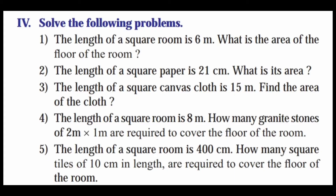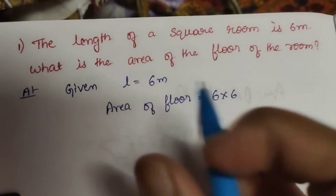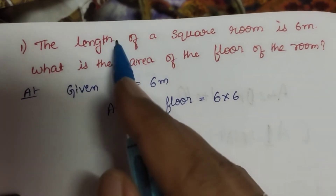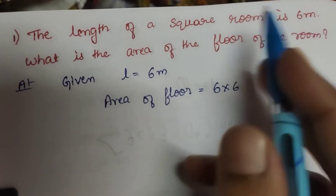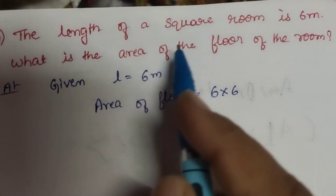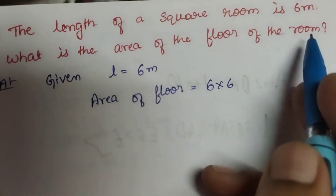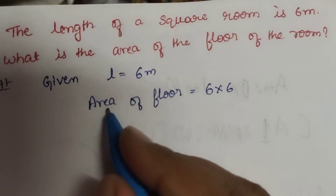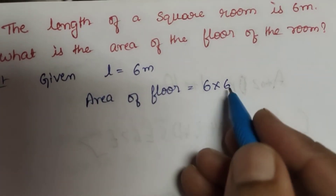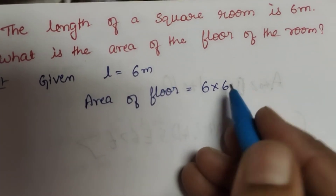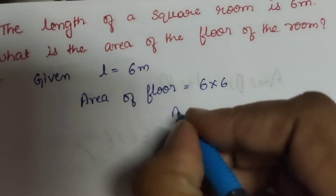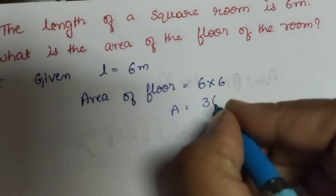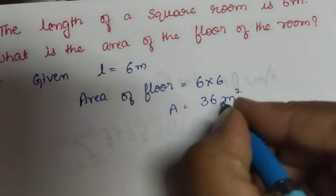Fourth: solve the following problems. First question: the length of a square room is 6 meters. What is the area of the floor of the room? Given length is equal to 6 meters. Area of the floor is equal to length into length, that is 6 into 6. Area is equal to 36 meter square.